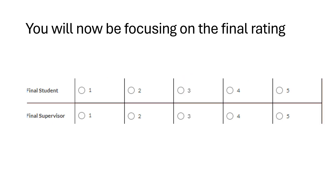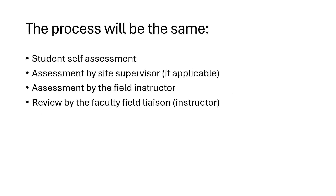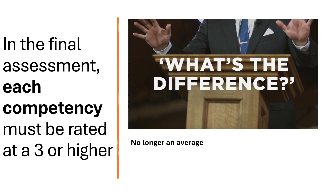As you will see, there will be an area of self-assessment completed by the student and then a final supervisor section completed by either the site supervisor and/or the field instructor, with the field instructor again having the ability to agree with a site supervisor rating or change it, and the site supervisor having the ability to opt out of that section. Very similar to the midterm assessment, but now focusing on the final assessment and overall competency of the student at the completion of their placement. The same step process applies: the student completing the self-assessment, the site supervisor providing information if applicable, the field instructor, and then the faculty field liaison being involved at the end.